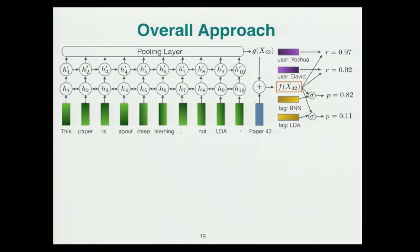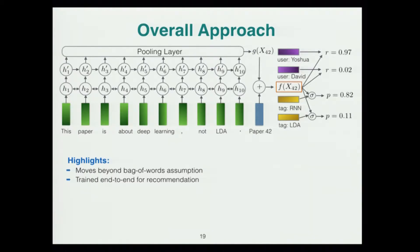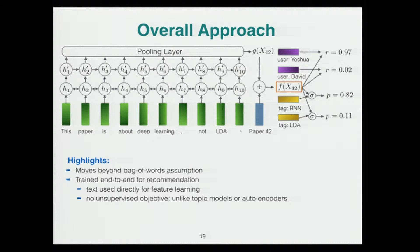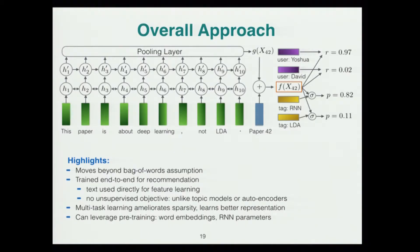This is our overall approach. Key highlights: it moves beyond bag of words representations to leverage higher-order sufficient statistics useful for recommendation. It's trained end-to-end for recommendation, consuming text directly as input for feature learning, as opposed to defining an unsupervised objective on the text that may or may not help recommendation. Multitask learning helps ameliorate sparsity and learns better representations. We can also leverage unsupervised data to pre-train word embeddings and RNN parameters — specifically, we use pre-trained embeddings on ACM abstracts. Dropout regularization and other techniques are also used.